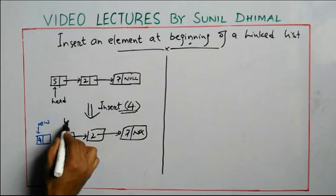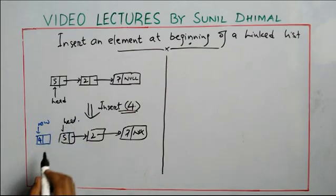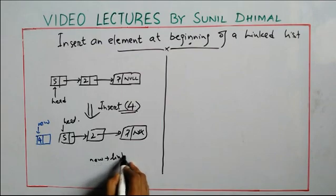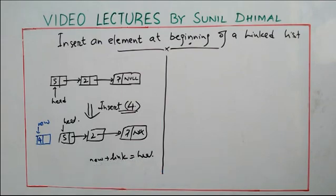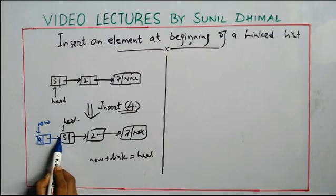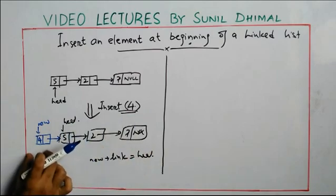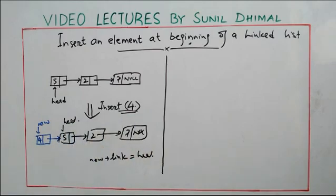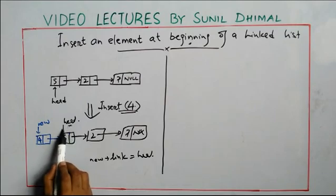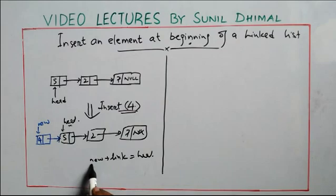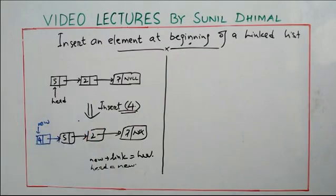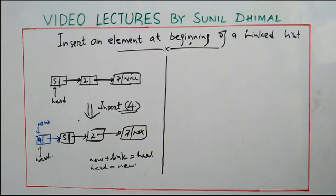Now I need to create a link between 'new' and head. I make the link of 'new' point to head. Now I've added the new element at the beginning. But the first element in the linked list must always be pointed to by head, so I move head to 'new': head = new. Now head points to the first node and I'm done.